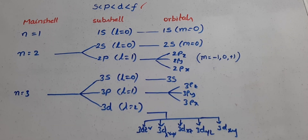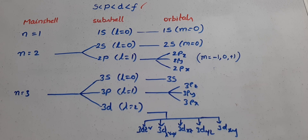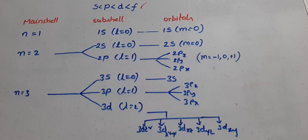This is all about the energies of orbitals in brief. The next topic is the distribution of electrons according to the rules — Aufbau principle and Hund's rule — which will be explained in the next video. Please subscribe to my channel if you found it useful for your academics. Thank you.